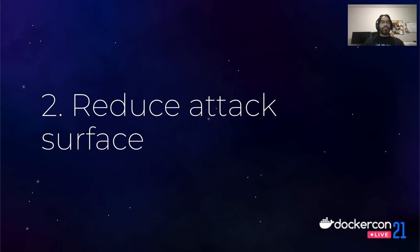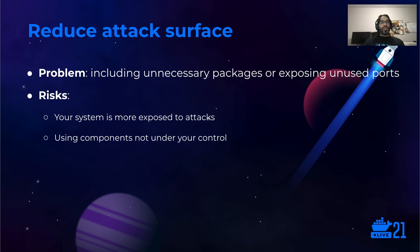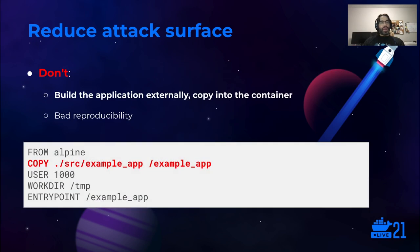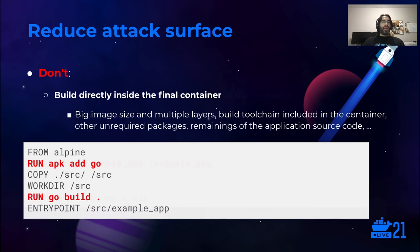Moving on, the next set of good practices is targeted to reduce attack surface. The problem we are trying to solve here is that including unnecessary packages or exposing unused ports makes your system more exposed to attacks. Also, if you are using and deploying components not under your control, you could include exploitable vulnerabilities. Regarding how you build an application that will run inside your container, one thing you should avoid is building the application externally and then copying the resulting artifact into the container — you are disregarding reproducibility, as different developers can be using different versions of the compiler or different libraries.